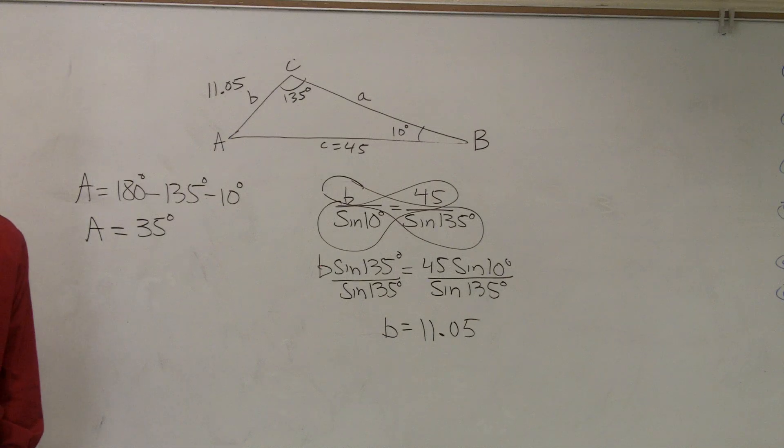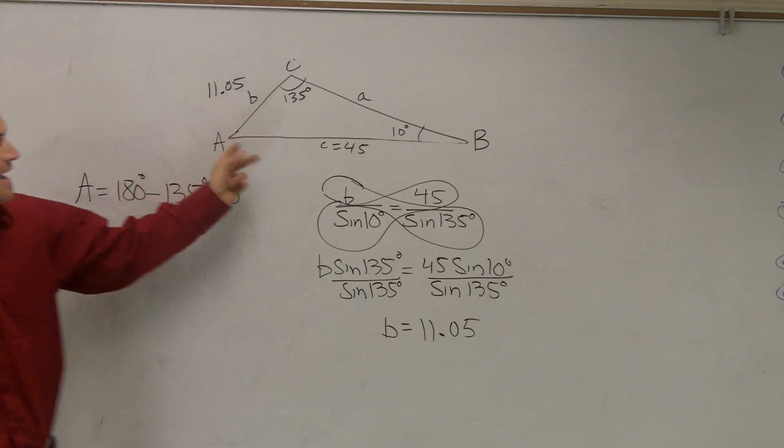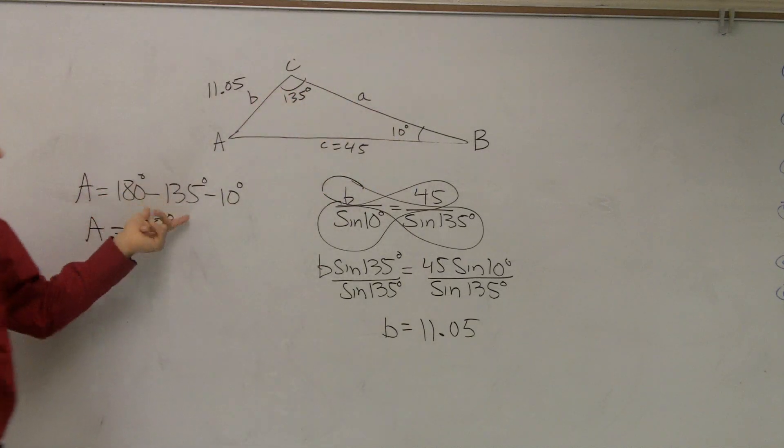So A equals 35 degrees. Correct? Hunter, remember all the angles in a triangle add up to 180. Oh, sorry. So you could say A plus 135 plus 10 equals 180. Subtract these two on the other side, and you get this formula.